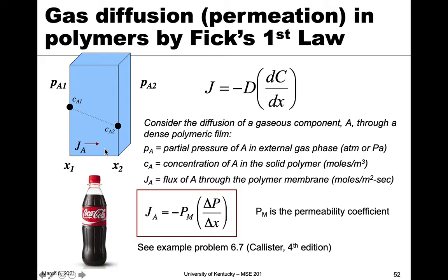If we set up this problem, we're going to look at a polymer with a certain concentration Ca1 on one side, and the lower pressure or concentration Ca2 on the other. Instead of concentrations in moles per volume, we equate those to the partial pressure of the component we're looking at in the gas phase. It's just a more convenient way of looking at pressures — you can think of this as the pressure that builds up in a bottle, and we can look at the inside versus outside for gas permeation.